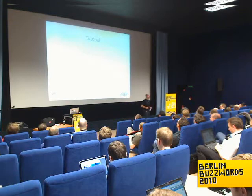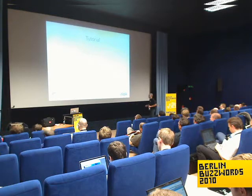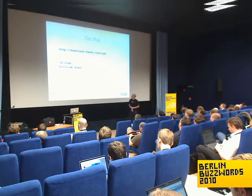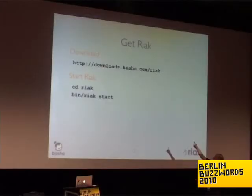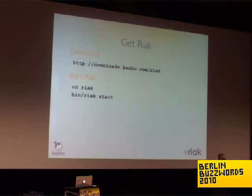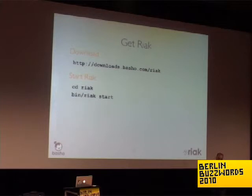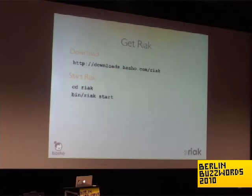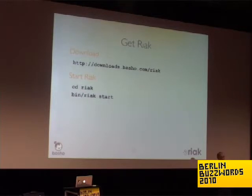Getting Riak is pretty simple. There are binary builds you can download from downloads.basho.com/riak. You can get a build for OS X — just unzip and run it — as well as builds for different versions of Linux. No Windows builds, I'm sorry. To start Riak, change to the directory you want and run bin/riak start. Running bin/riak on its own shows commands to start, stop, join a cluster, leave a cluster, and so on.